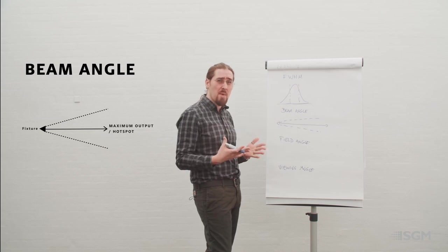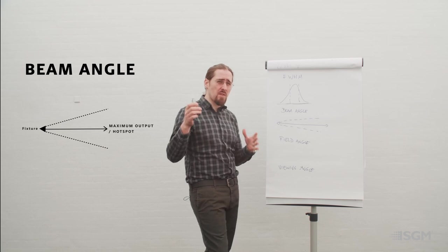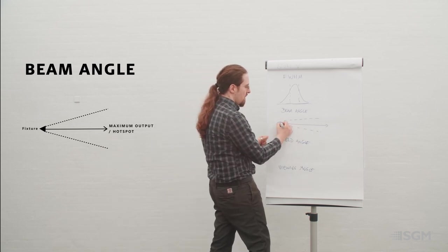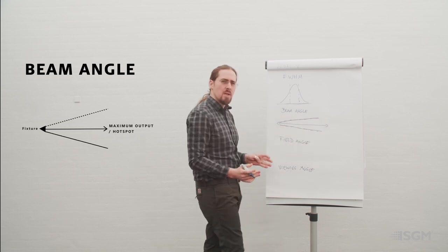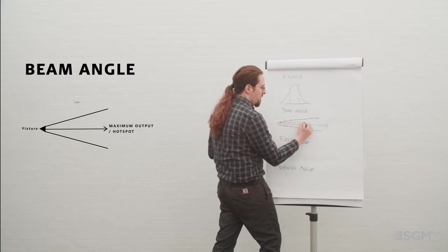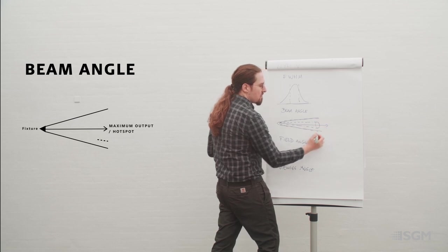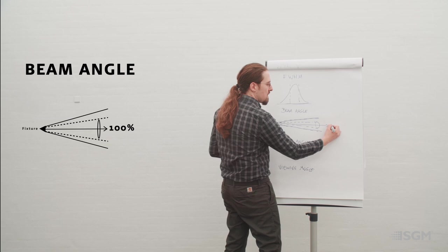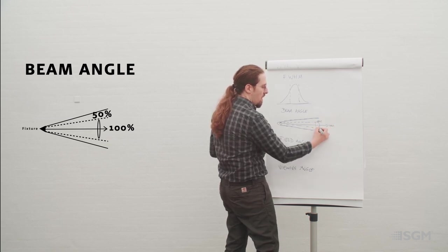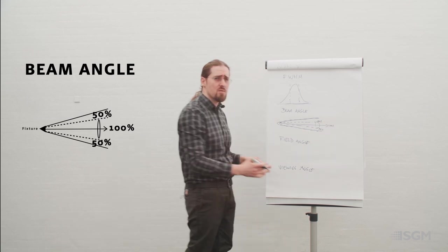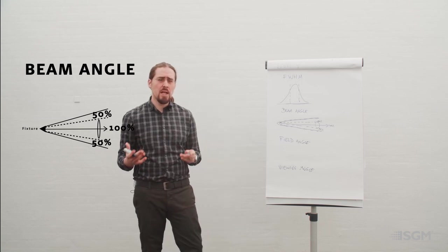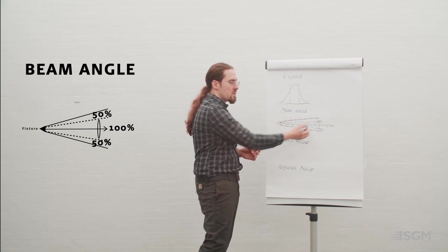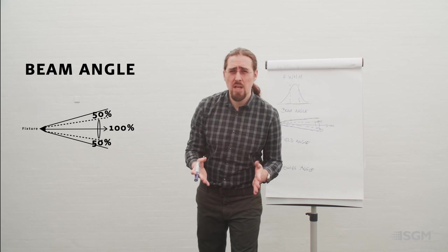This is related to full width half maximum. If you consider that at the center you have what we normally call a hotspot — the maximum output for that specific luminaire — then there is an area where light is visible, and within that area there's a point where output is 50% or above. So if your center point is 100%, the point where output is 50% of that reference hotspot defines your beam angle. We measure this in degrees — the fewer the degrees, the narrower your beam.